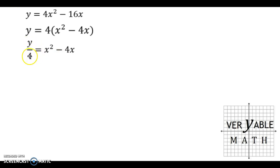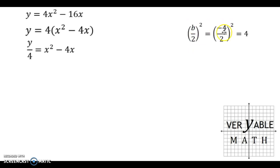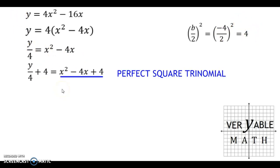I'm going to get rid of the 4 by dividing both sides by 4 — the left side becomes y over 4, which we'll store there until we solve for y again. On the right-hand side, dividing by 4 eliminates that coefficient. Now I need to find the new c value using the b over 2 squared trick. My b value is negative 4: negative 4 divided by 2 squared gives negative 2 squared, which is 4. So I'm going to add 4 to both sides, and the right side becomes a perfect square trinomial, which we then turn into a squared binomial.